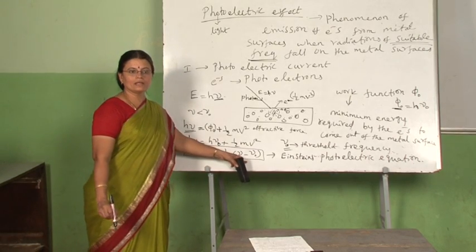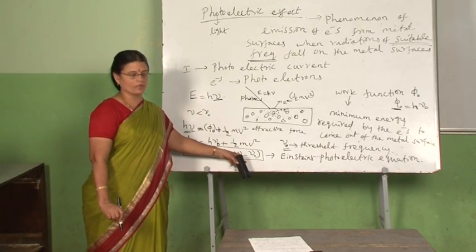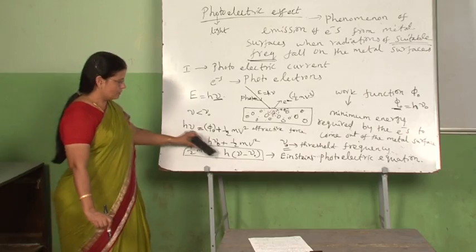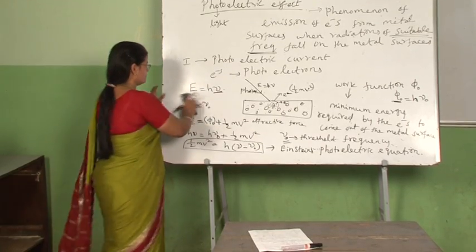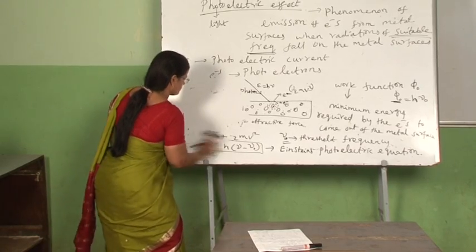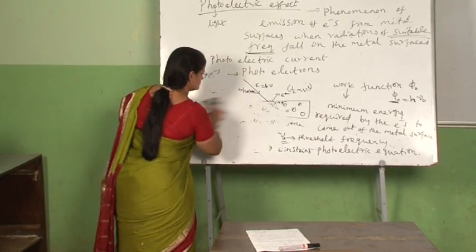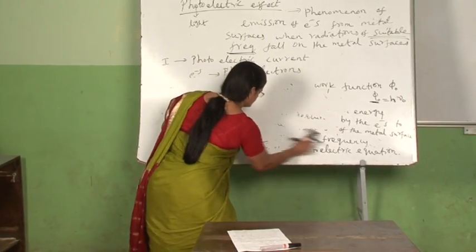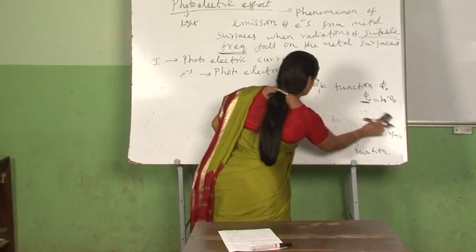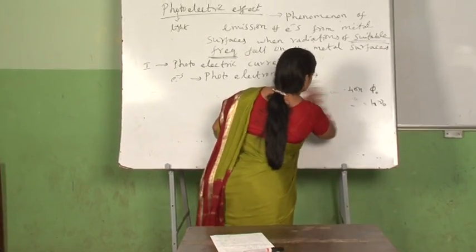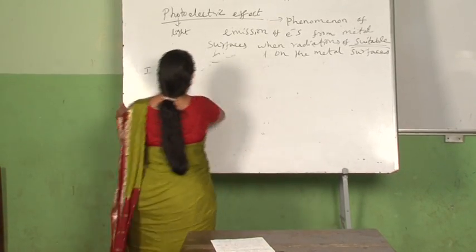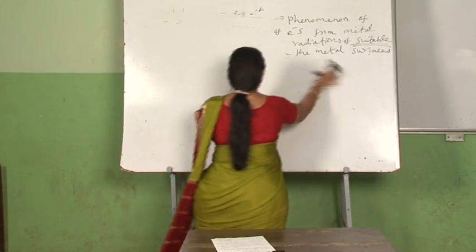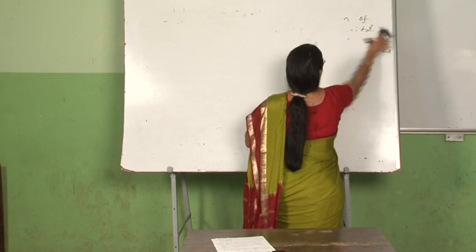This equation is given by Einstein and named after him as Einstein's photoelectric equation. Einstein gave the theoretical explanation for the photoelectric effect. The photoelectric effect was discovered by Hertz and Hallwachs, and Einstein provided the theoretical explanation for it.